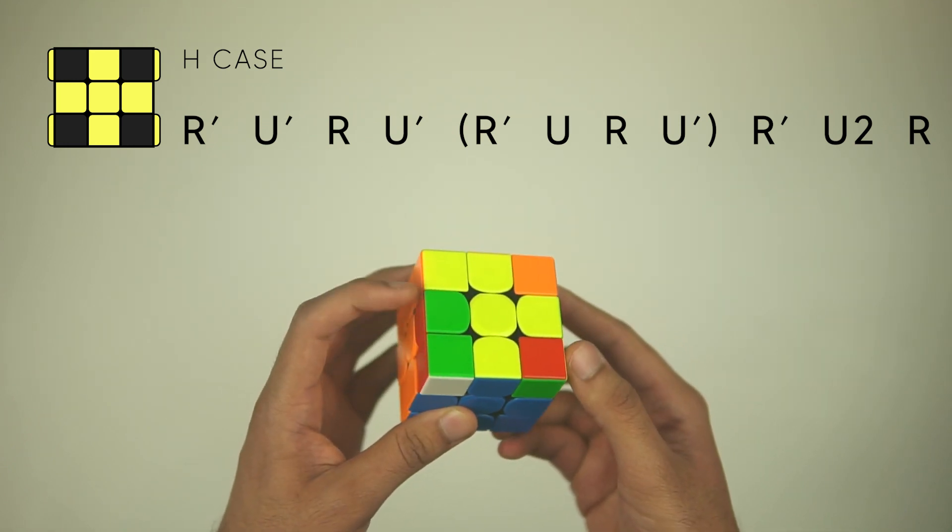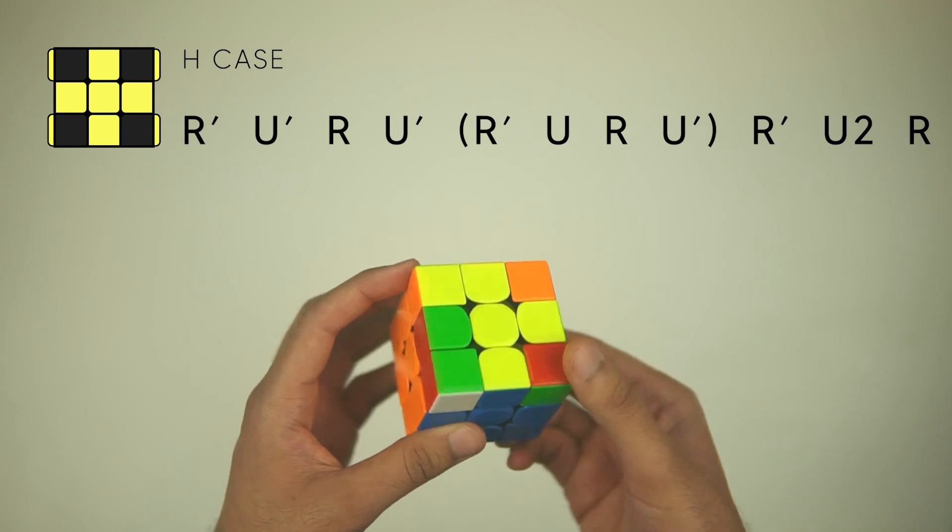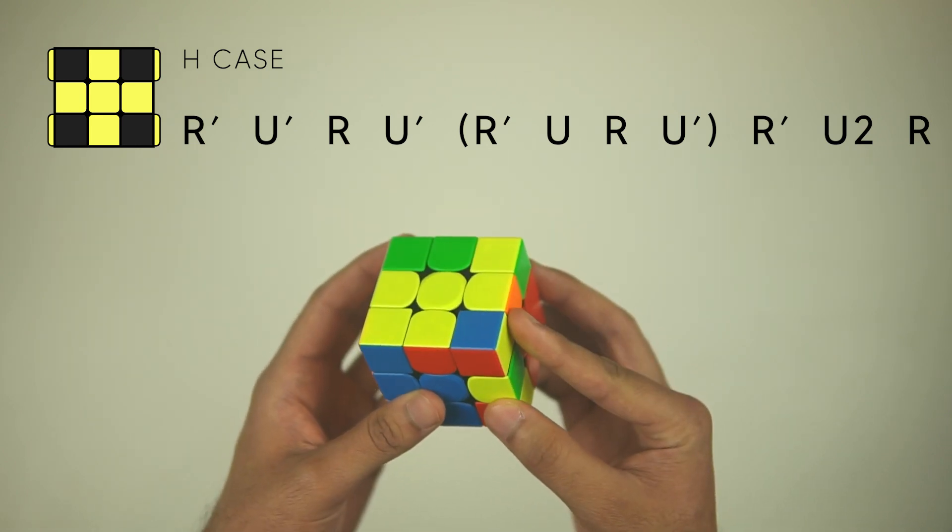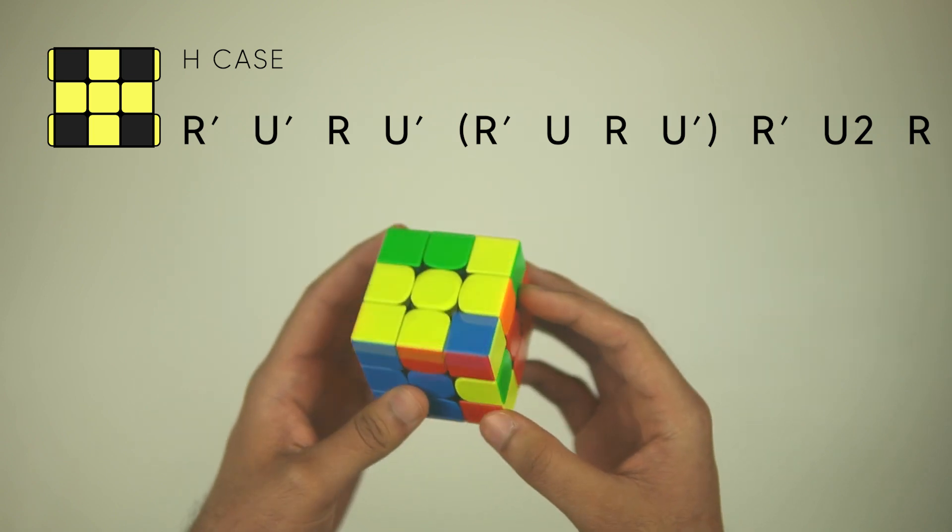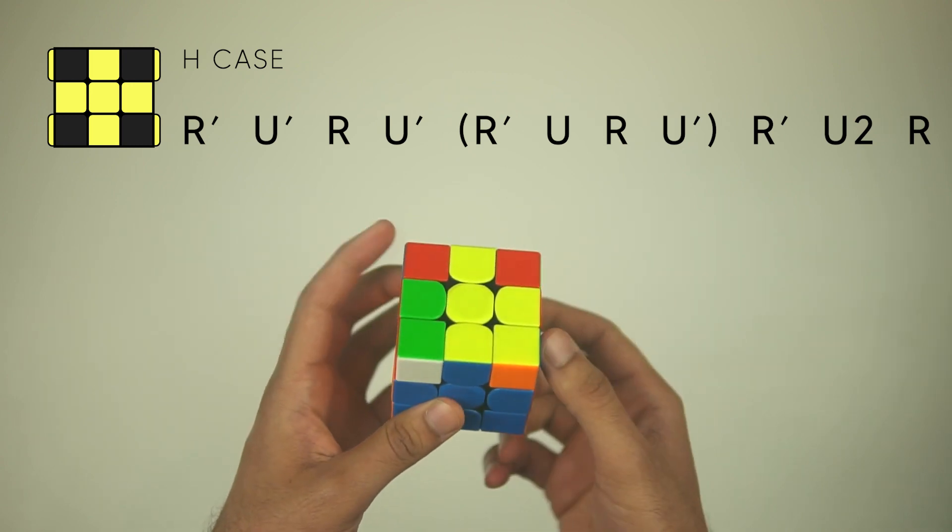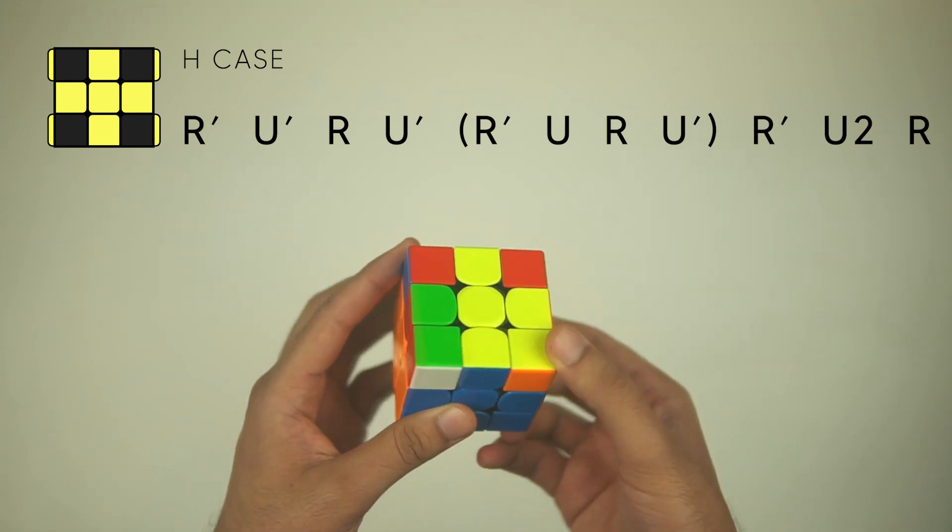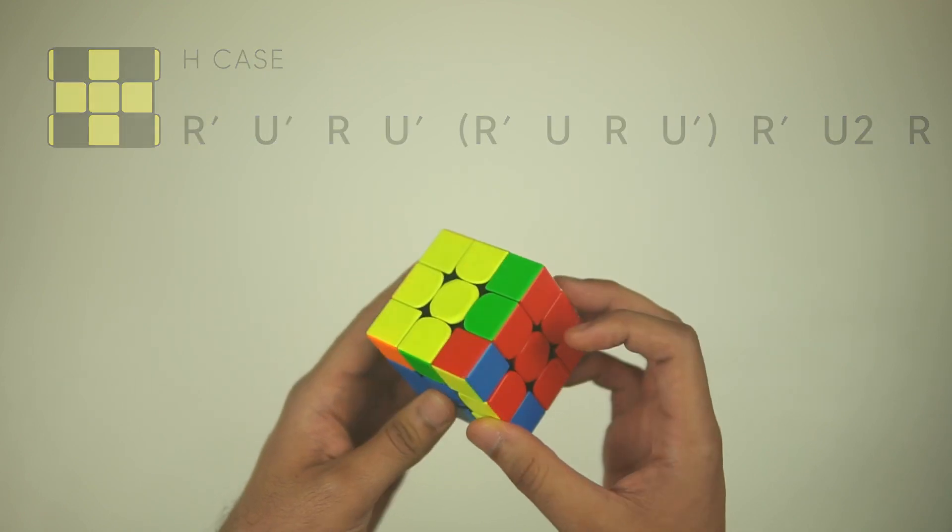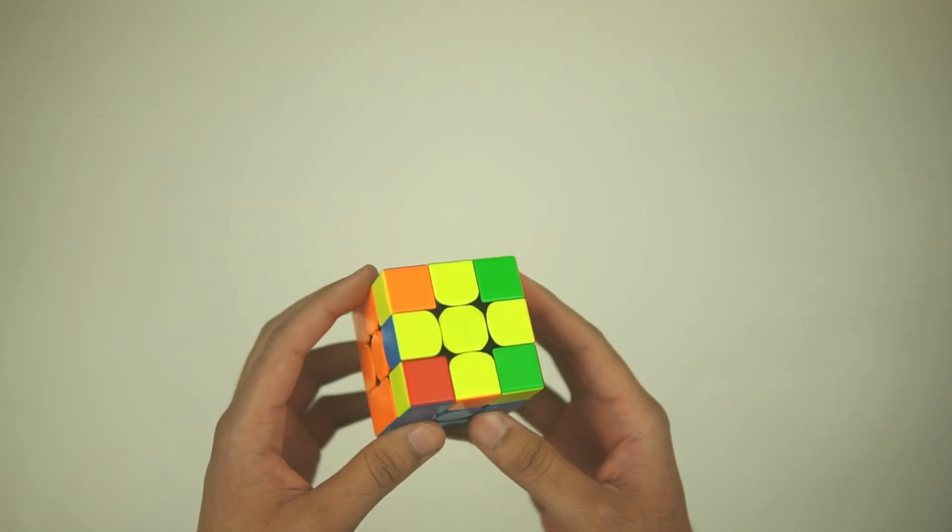And then we're going to do an R', U, and instead of inserting it, we're going to actually return this cross back with an R, U' to move it over once. Now we're going to insert this F2L pair with an R', U2, R.